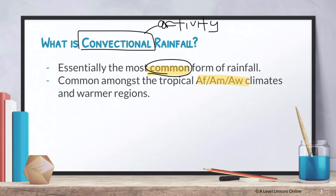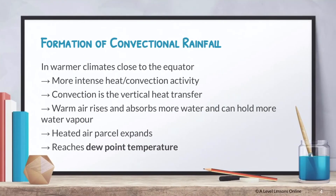Convectional rainfall is most common amongst tropical rainforest, tropical monsoon, and tropical steppe climates. These are areas with high heat because they are near the ITCZ — the Intertropical Convergence Zone — which is an area of intense convectional activity, resulting in a high amount of convectional rainfall.